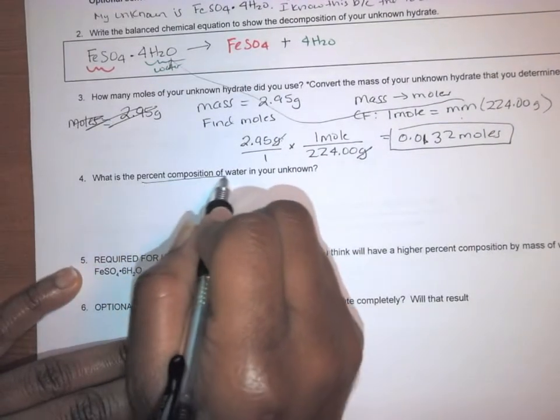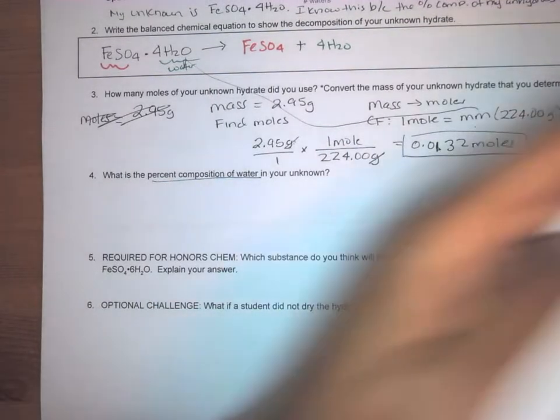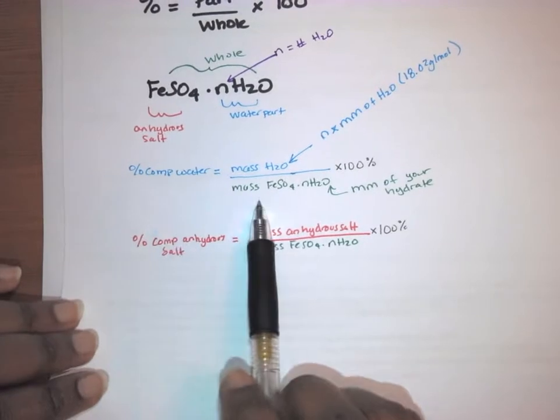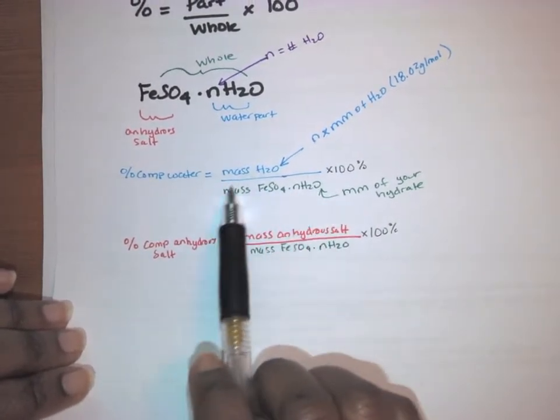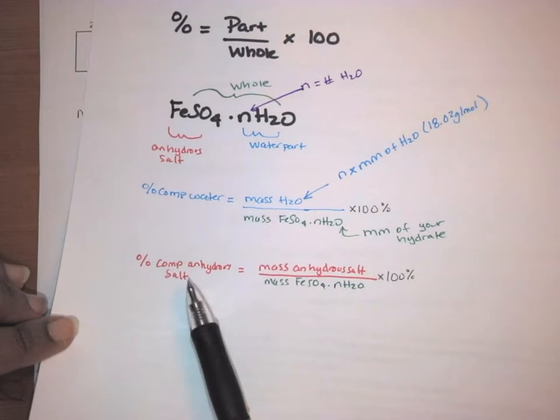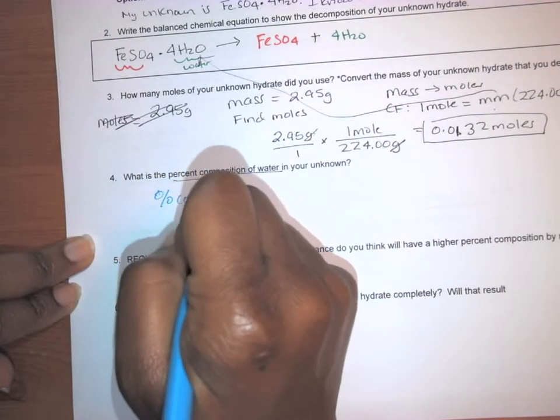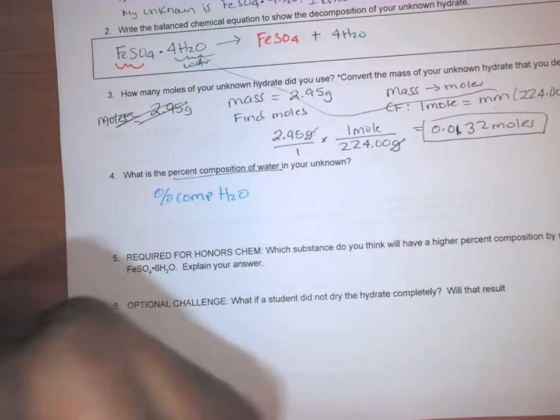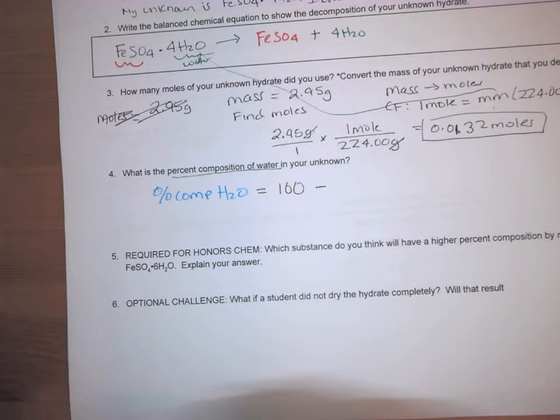The next one is asking about the percent composition of water and your unknown. So for this part here, you could, if you wanted to do sort of the work that we did previously, the mass of water that you lost divided by the mass of the entire compound, but that's a lot of work. So instead of doing that, you've already calculated the percent composition of your anhydrous salt, right? So what you're going to do to get the percent composition of the water, remember that the overall percent must equal to 100.